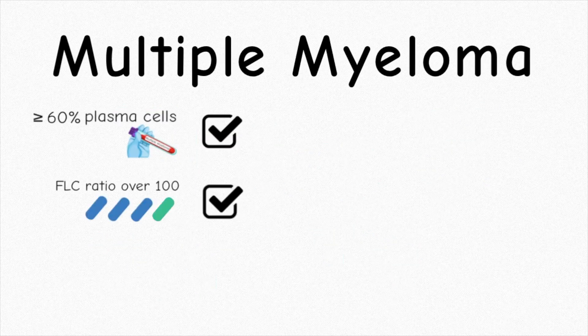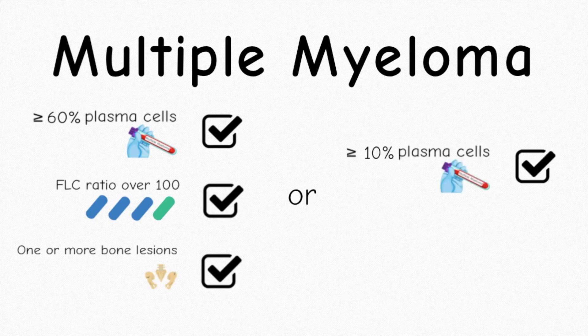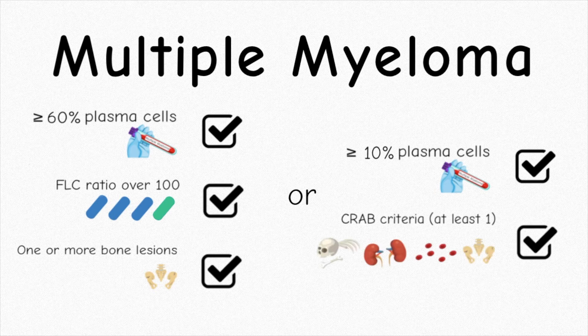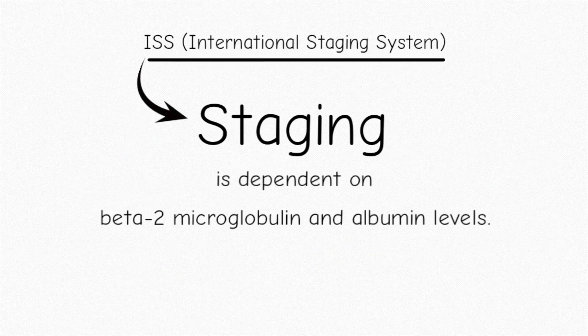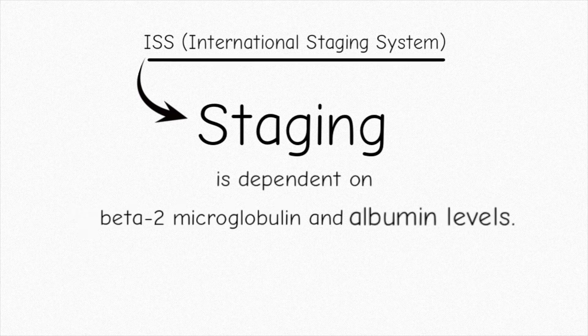After running all these tests, your oncologist can diagnose you with multiple myeloma if you fall under one of these two categories. After diagnosis, your multiple myeloma will be staged. On All4Cure, we record the ISS staging on your dashboard.